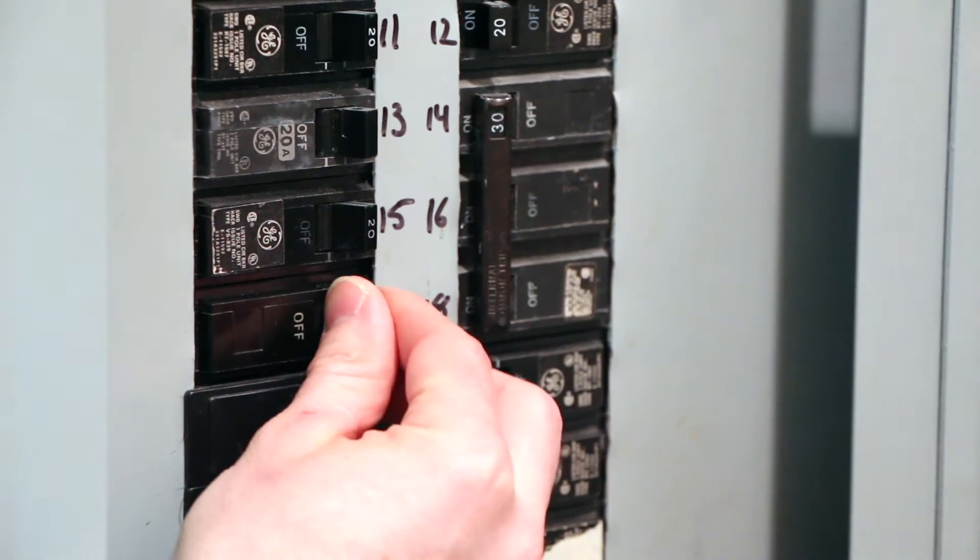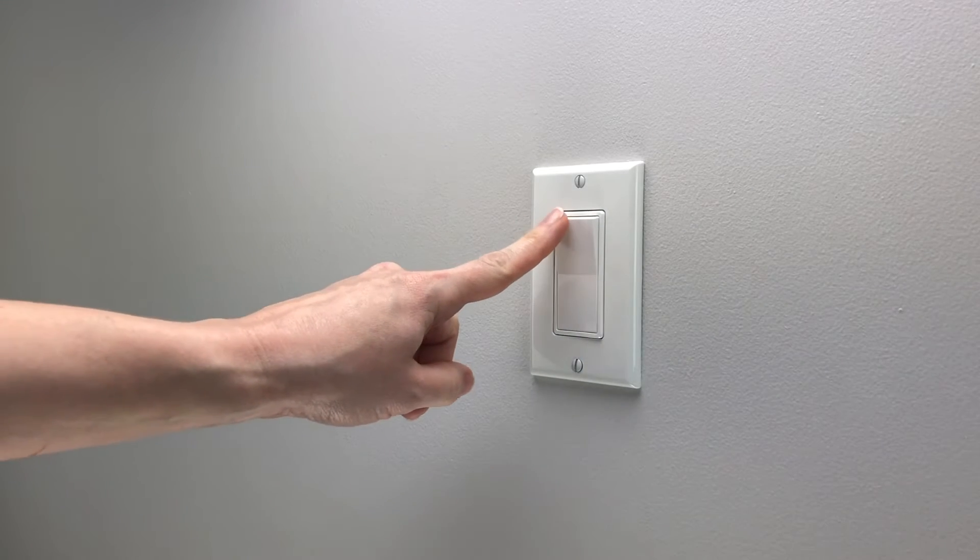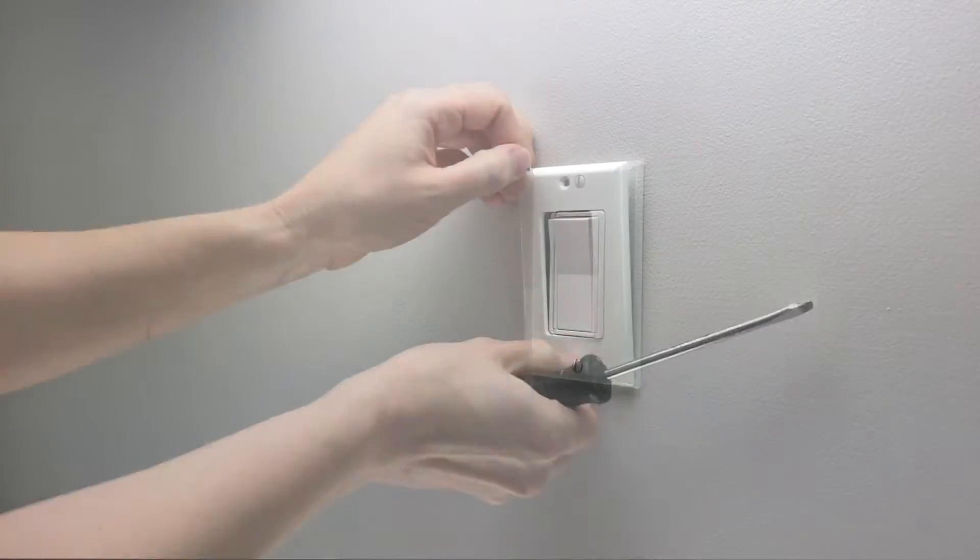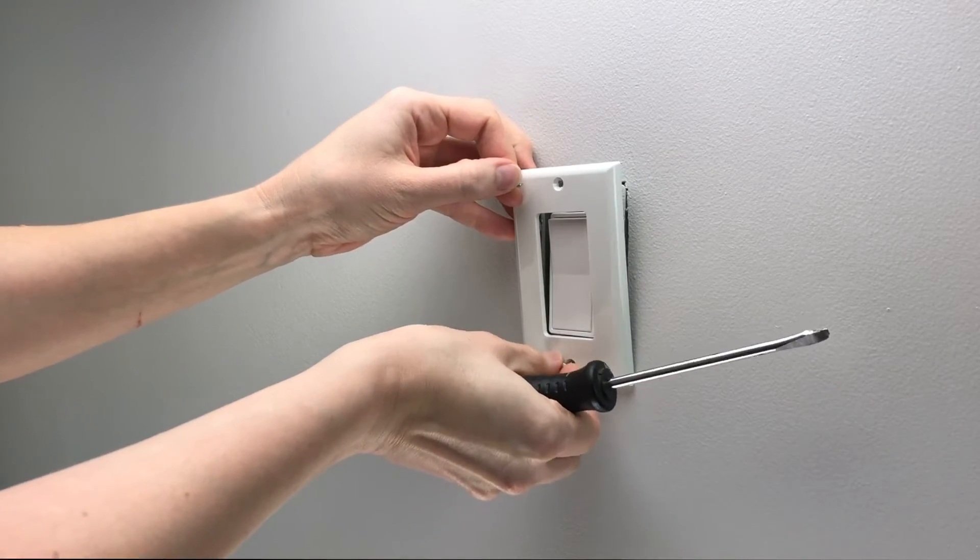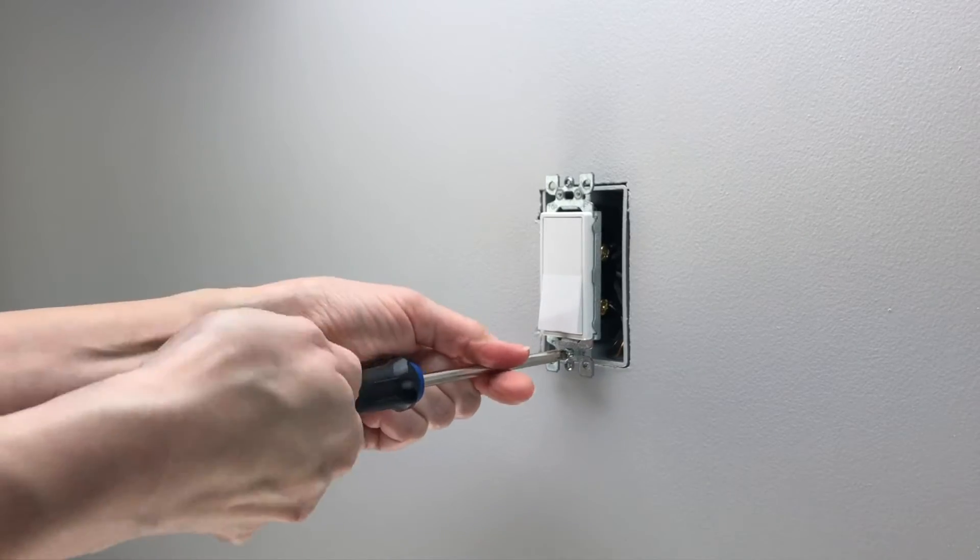Turn off the power at your breaker or fuse panel for the appropriate circuit of your home. Turn the existing light switch on, then off, to confirm the power has been turned off. Remove the existing faceplate, unscrew, and pull the switch carefully out of the gang box.